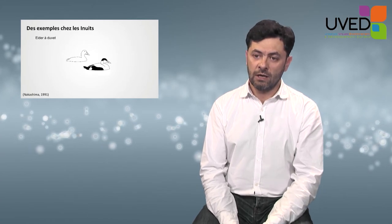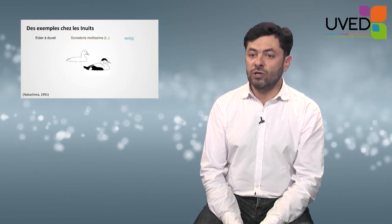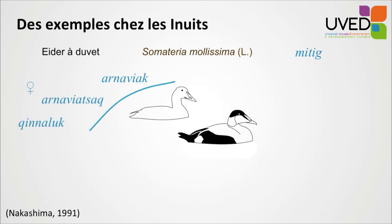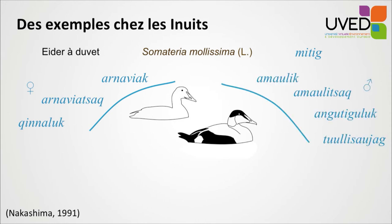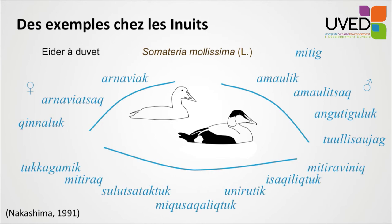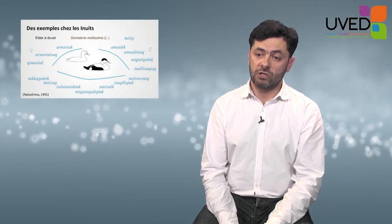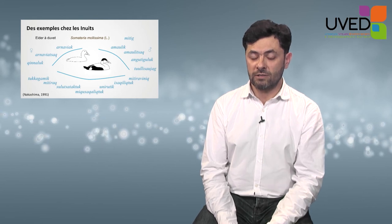Now a more northern example: the eider duck. For this species, there is a single scientific denomination, Somateria mollissima, and a more overall category for Inuit populations. The female is brown and the male is black and white. But for the Inuit, there are three denominations for the female depending on sexual maturity, four denominations for the adult male depending on feather stage, and seven denominations for the duckling from hatching to the stage when it almost reaches sexual maturity, called mitravinik. This illustrates the richness of vernacular science — up to 50 taxons in the vernacular classification compared to one scientific name.